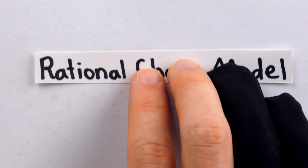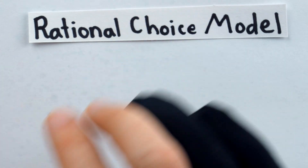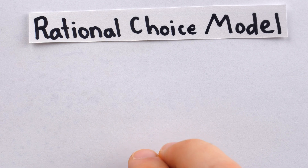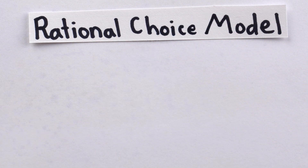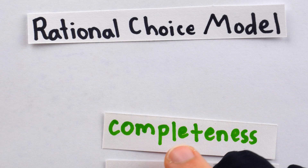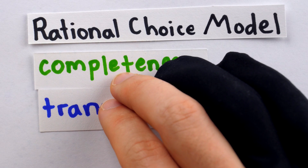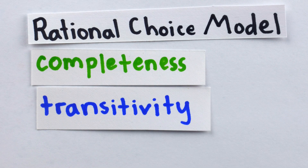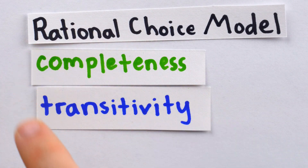If somebody's preferences violate an axiom of the rational choice model, they can very easily be exploited by what's called the money pump. The rational choice model is a simple model for understanding people's decision-making in social and economic situations, and it has two basic axioms.